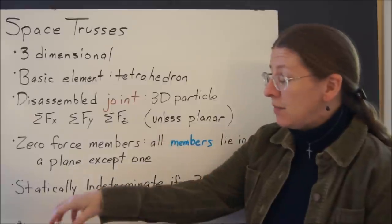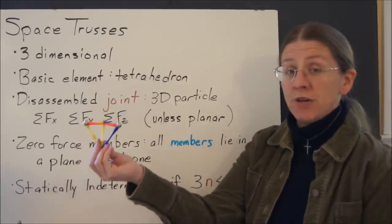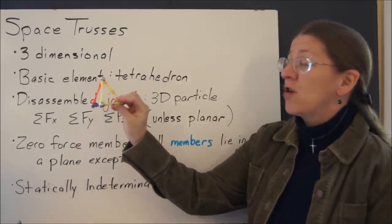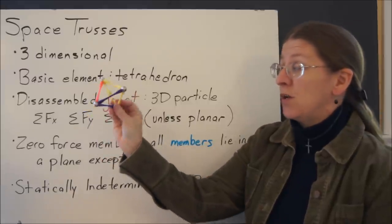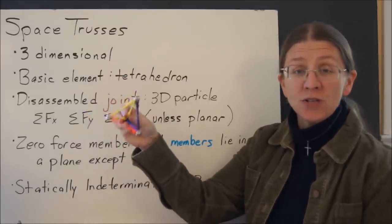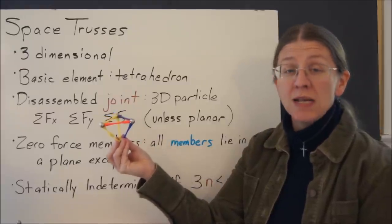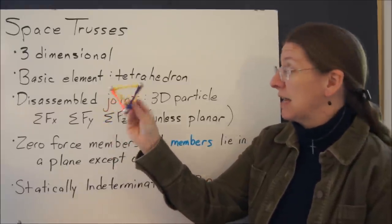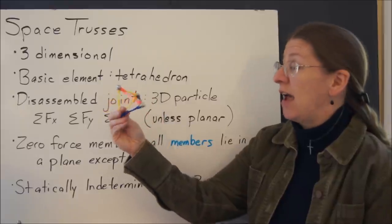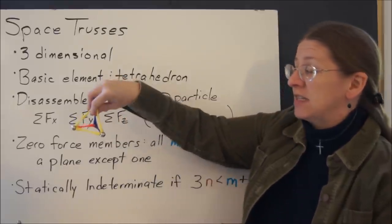The basic element of a space truss is a tetrahedron, and this is triangles all the way around. So no matter what side you're looking at, it's a triangle. It's different than a pyramid. Pyramids often have four-sided bases. These are actual tetrahedrons so that every single face is a triangle.